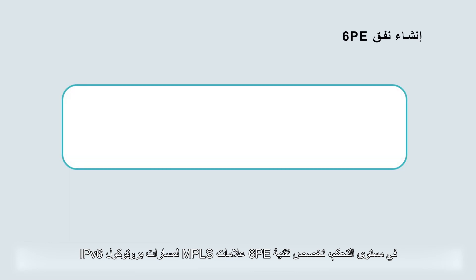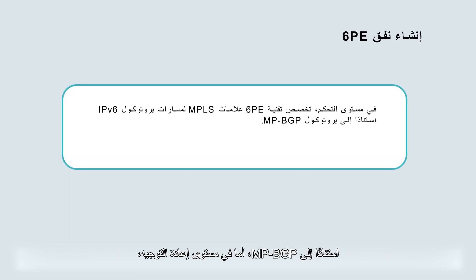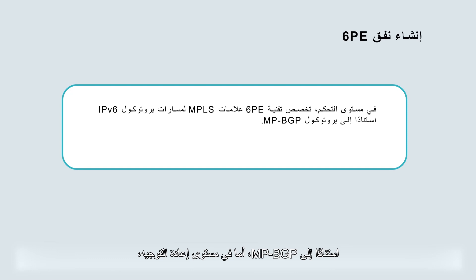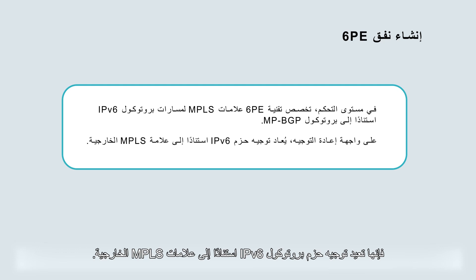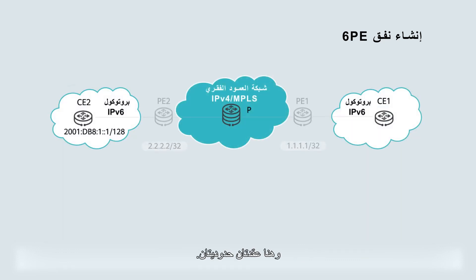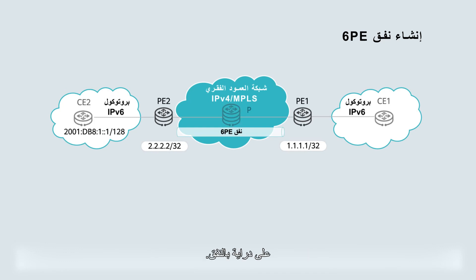The way in which 6PE works can be described from two aspects. On the control plane, 6PE allocates MPLS labels to IPv6 routes based on MPBGP. Whereas on the forwarding plane, it forwards IPv6 packets based on outer MPLS labels. The 6PE tunnel processes packets on PE1 and PE2, which are two border nodes. Other nodes, such as CE1, CE2, and the P, are unaware of the tunnel.